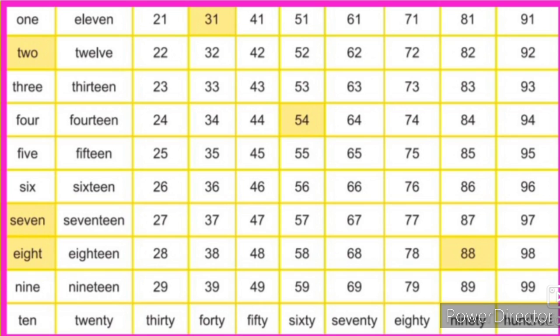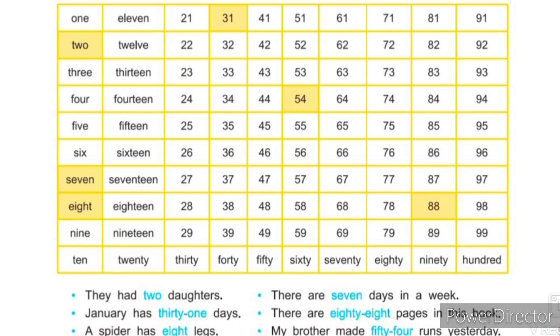This is a number table starting from 1 to 100. Some of them are written in words and some are written in figures. We can see that some numbers are given here in yellow color, and some sentences are there at the bottom side.